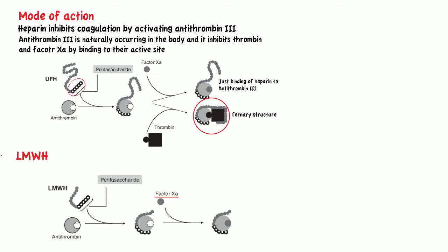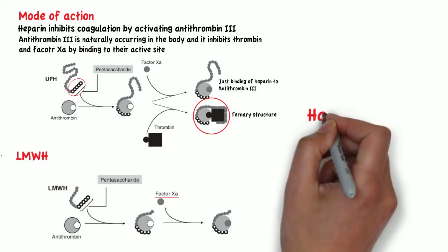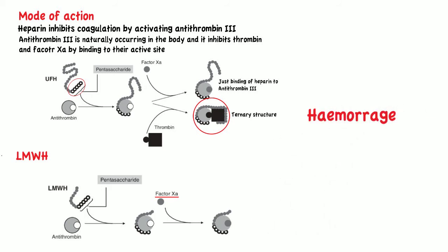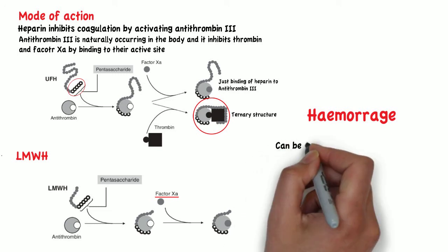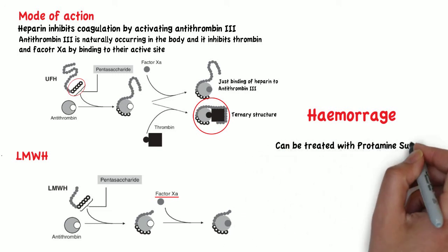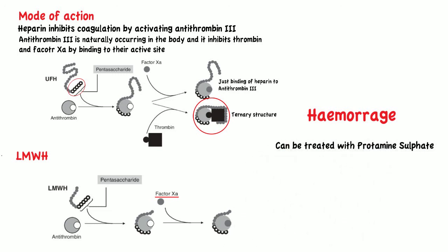One of the main hazards when treating a patient with heparin is hemorrhage. This can be treated by giving protamine sulfate, which is a compound that will form an inactive complex with heparin.